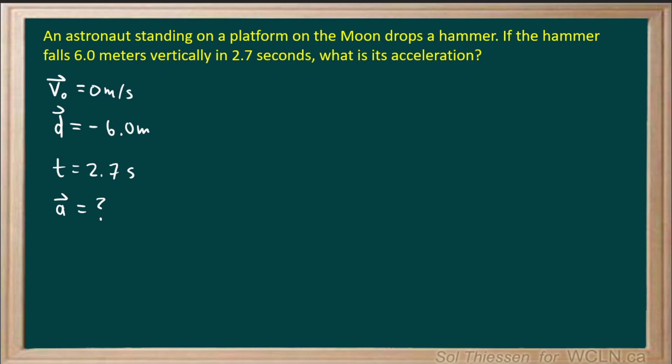So we can use this formula. Displacement is equal to initial velocity times time plus 1 half times acceleration times time squared. So we know that initial velocity here is 0, so this term will go to 0. We'll have displacement equals 1 half acceleration times time squared. We want to isolate for acceleration, so we'll multiply both sides by 2 over t squared.